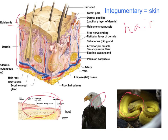Embedded in the dermis is a number of structures. We have the sweat glands, which are these swirly-looking glands that produce sweat to help keep you cool when you get too warm. We also have the sebaceous or oil glands, which secrete oil and are usually associated with a hair follicle. Hair is one of the derivatives of skin, so it's part of the system.